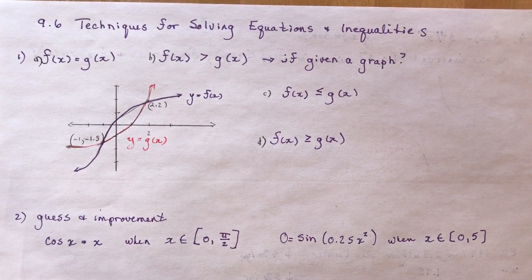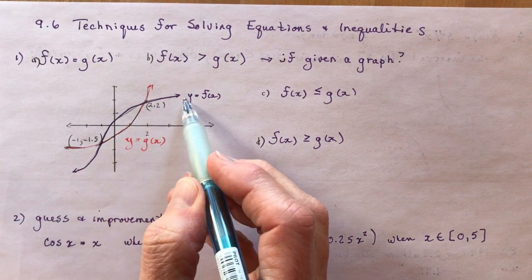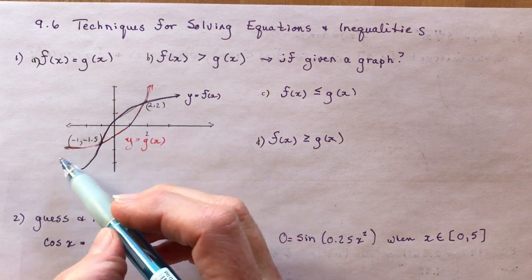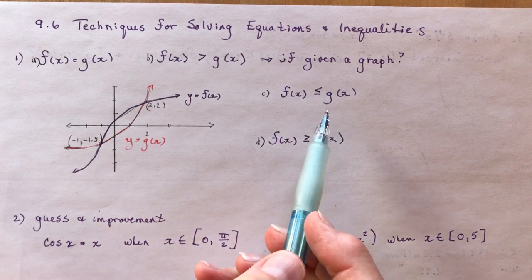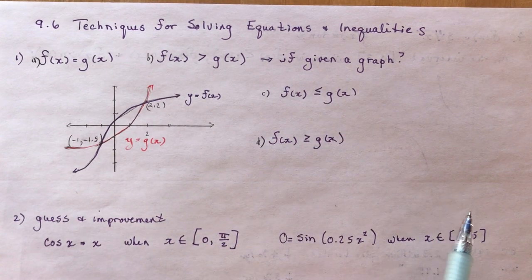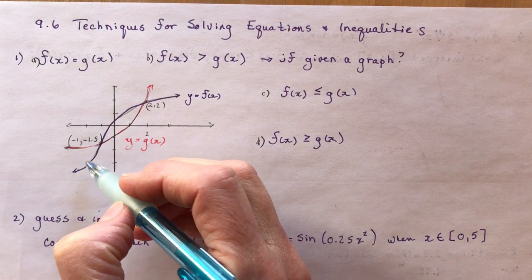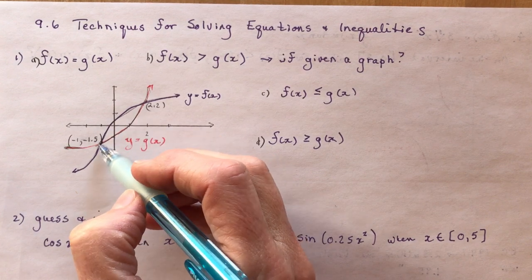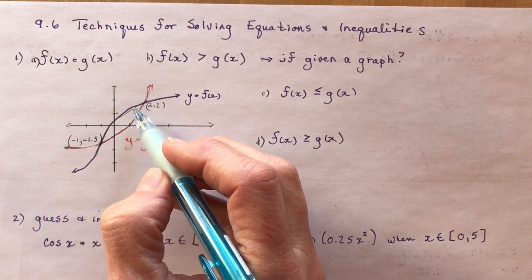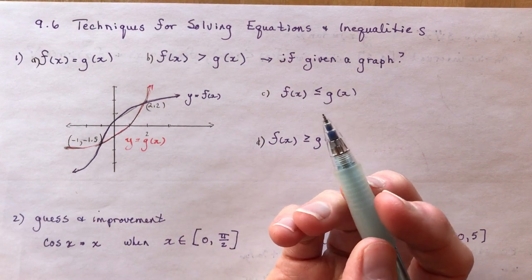The first one is from question one, graph number two. They have f(x) being this purple graph and g(x) being the red graph, and they ask you to find out where they're equal, greater than, and less than. You can do it easily just by looking at it — greater than means where the y-values are higher than the graph below.